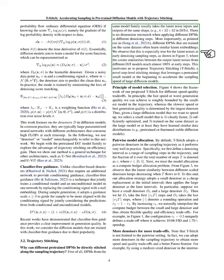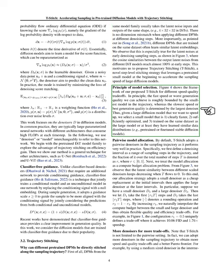This observation led us to propose trajectory stitching, or T-Stitch for short. This is a new strategy where we use a smaller, pre-trained model at the start to speed up the sampling process of larger diffusion models. When selecting models for T-Stitch, we aim for a balance between speed and quality. The smallest model sets the lower bound for speed and the upper bound for quality, while the largest model does the opposite. When choosing a small model to pair with a large one, we look for one that is significantly faster, well-optimized, and trained on the same or similar dataset.